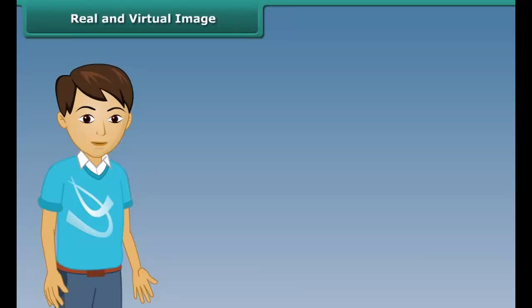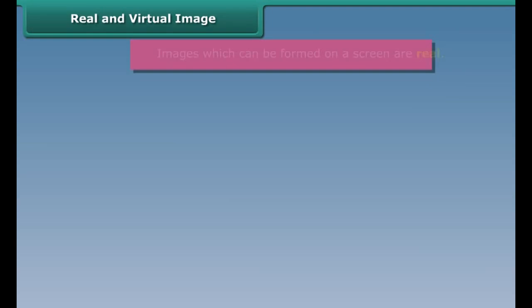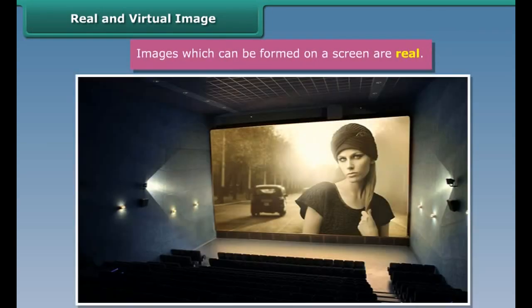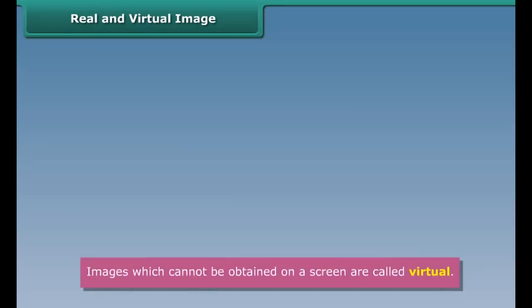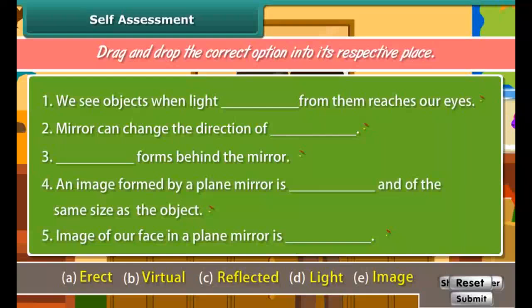Real and virtual image. Let us discuss what are real and virtual images. Images which can be formed on a screen are real — for example, images formed on a cinema screen. Whereas images which cannot be obtained on a screen are called virtual — for example, the image of our face in a plain mirror is virtual.